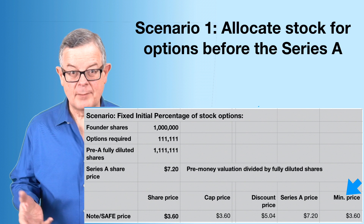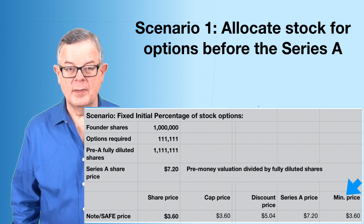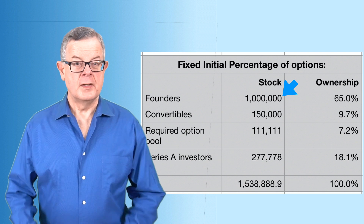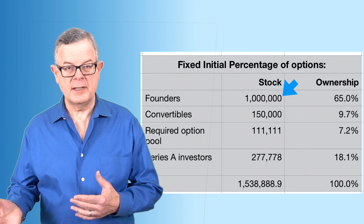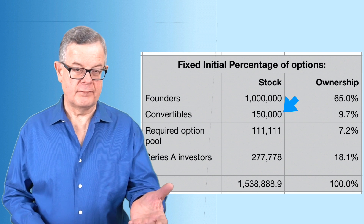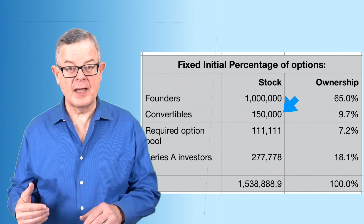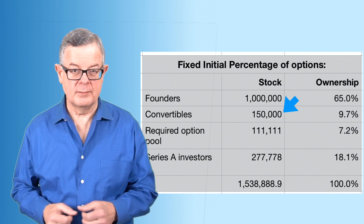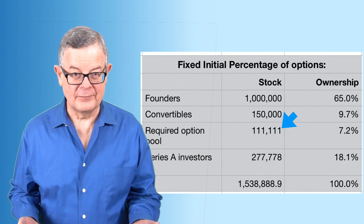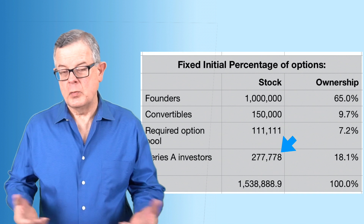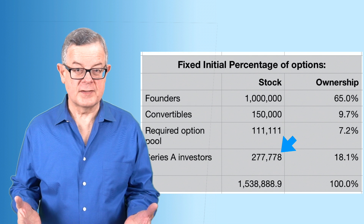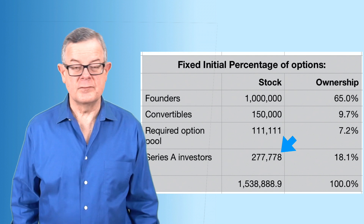The best deal comes from the cap because it's a very low cap compared to the pre-money value. Now that we have the prices, we can build the cap table. Founders have one million shares. The convertible security gets 150,000 shares — the $540,000 total ($500K plus $40K interest) divided by their calculated price. The option pool is 111,111 shares. The Series A gets their two million divided by $7.20, giving us a total of just over 1.5 million shares.